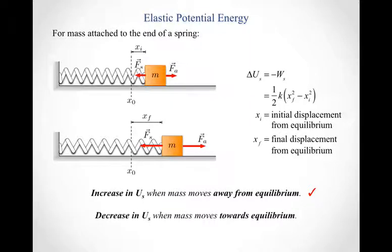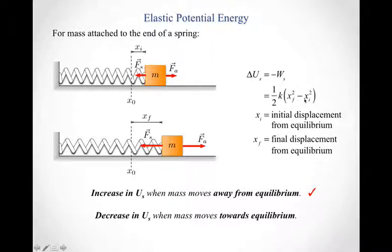On the other hand, if a mass moves towards equilibrium, then this initial term is larger than the final term. When we square both and subtract in the right order, I get something negative in the parentheses, multiplied by positive k, multiplied by a positive number — so I get a decrease in elastic potential energy when the mass moves back towards equilibrium.